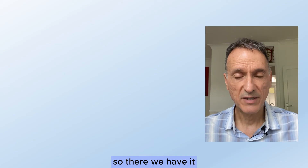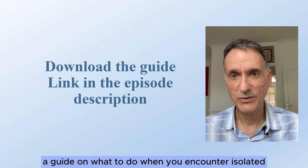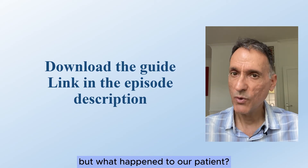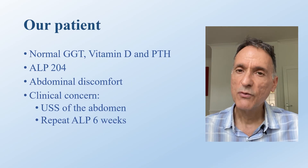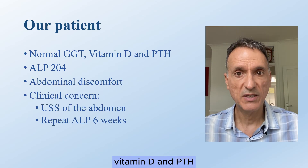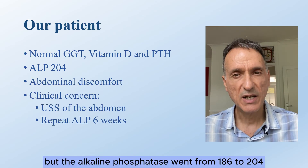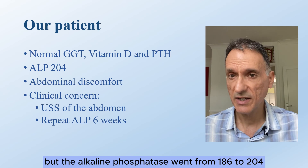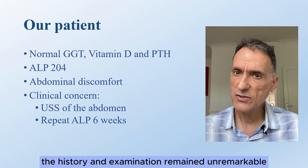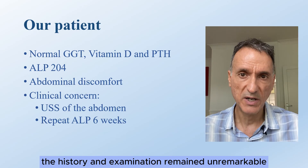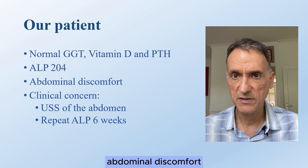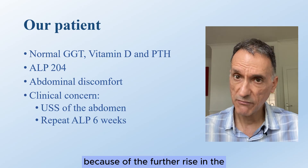So what happened to our patient? Repeat testing showed normal results including gamma GT, vitamin D, and PTH, but the alkaline phosphatase went from 186 to 204. Her history and examination remained unremarkable, but she started to complain about some abdominal discomfort.